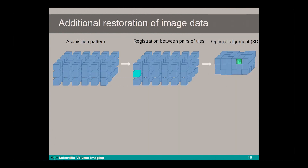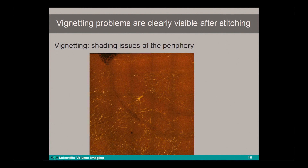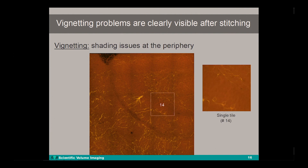After tile registration, the wizard offers the user the possibility to correct for any vignetting and to increase the contrast and resolution by including a deconvolution step. The vignetting correction is a step that needs to be applied to the single tiles before the actual stitching. It is also preferred to apply the deconvolution on the single tiles and not on the stitched image, so that the computational workload is kept to a minimum. Vignetting is an imaging artifact caused by an uneven illumination of the field of view. It is present in each single tile, but just not easy to recognize in a single tile. After stitching, the vignetting in each tile becomes clearly visible and appears as an array of shading.